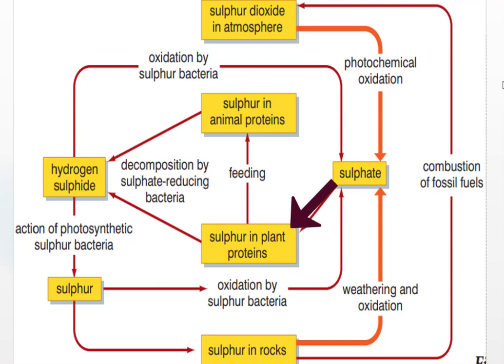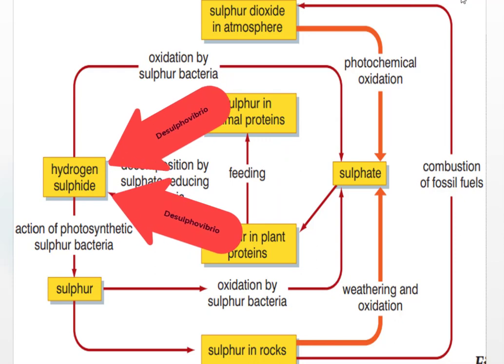Sulfate ions in the soil are taken up by plants and incorporated in plant tissue, including some sulfur-containing amino acids like methionine and cysteine. These sulfur-containing proteins are then passed to animals by feeding and digestion. Through feeding and digestion, this sulfur gets incorporated or assimilated into the animal's body in the form of sulfur-containing protein.